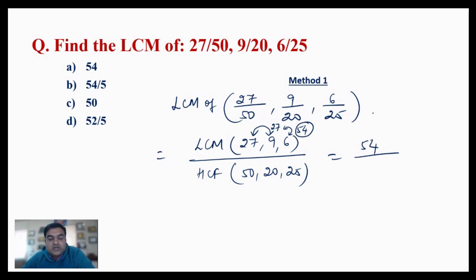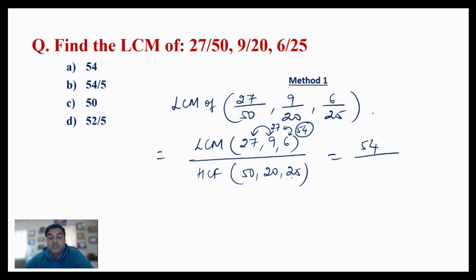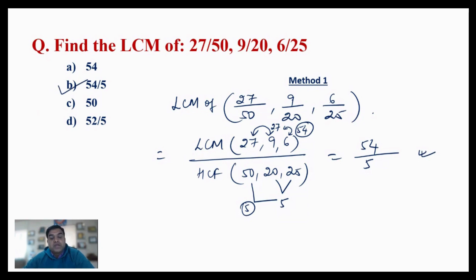If you don't understand the shortcut for finding LCM, please refer back to the earlier video. Now for the HCF of the denominators: the highest common factor of 20 and 25 is 5, and the HCF of 50 and 5 is also 5. So the HCF of 50, 20, and 25 is 5. Therefore, the answer is 54/5, which is option B.